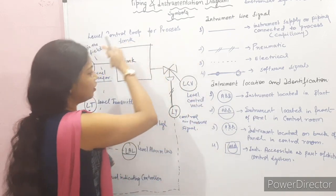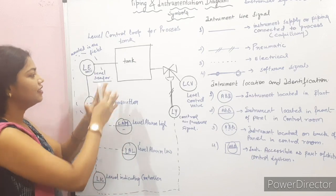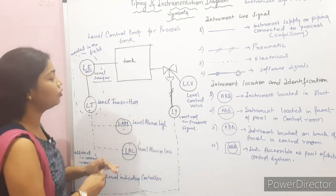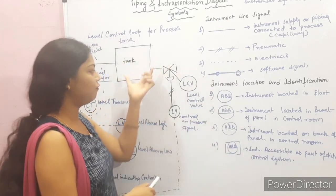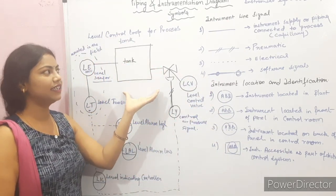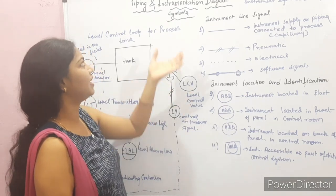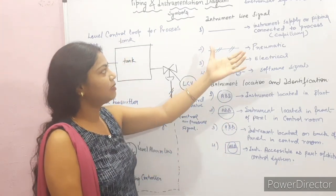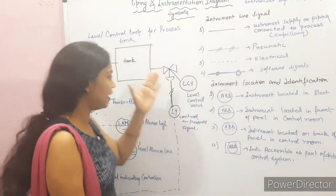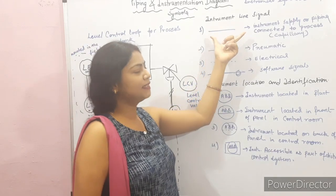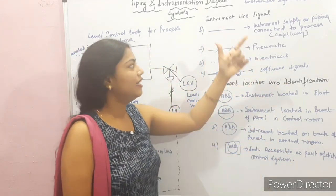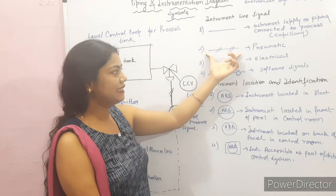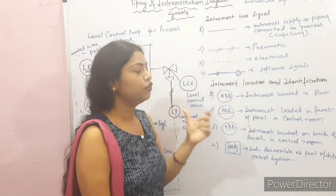Now let's understand how we read a flow sheet diagram — what the symbols, lines, and tanks represent. If we have a solid line, it represents the instrument supply and piping connected to the process; a capillary pipe can also be used. If we have a dashed line, it represents a pneumatic pipe.